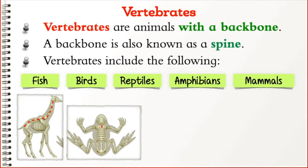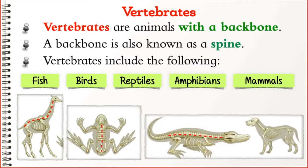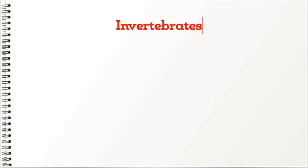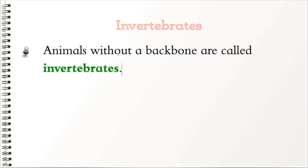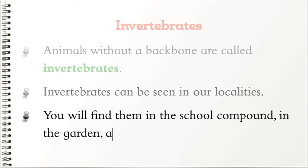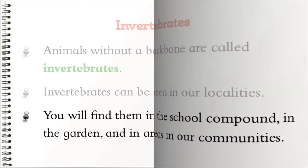Vertebrates include fish, birds, reptiles, amphibians, and mammals. Animals without a backbone are called invertebrates. Invertebrates can be seen in our localities — you will find them in the school compound, in the garden, and in areas in our communities.